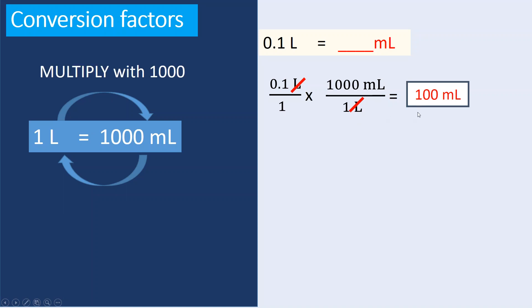Another way to do that is to simply multiply the liters by 1000 to get milliliters. Or you can move the decimal point three digits to the right side. For example, with 0.1, move three digits right — one, two, three digits — and you get 100 milliliters. That's a simple way to convert directly from liters to milliliters.